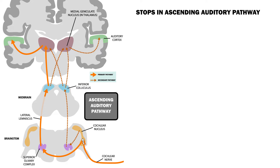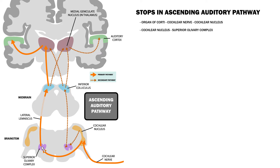Our information is at its first stop, the cochlear nucleus. From here, most of the neurons cross over to the contralateral side. This is the primary pathway that the information takes. However, there is also a secondary pathway, in which some neurons stay on the ipsilateral side. In both cases, the neurons synapse in the superior olivary complex, which is also in the brainstem.